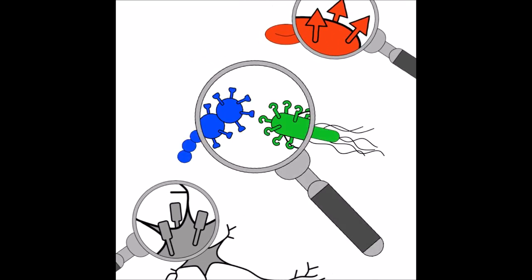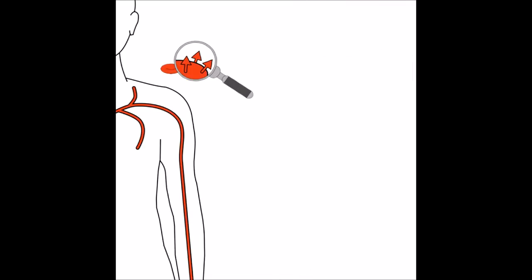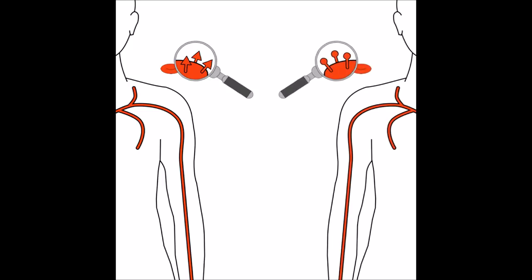Bacterial cells have different sets of cell surface markers compared to human cells. Sometimes, even the cells from one person have different sets compared to another person. For example, the red blood cells of blood group A have different surface markers from those of blood group B.